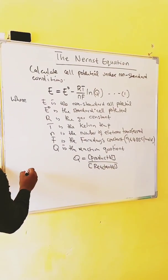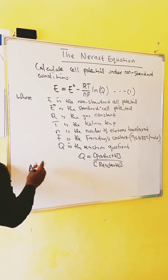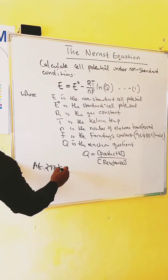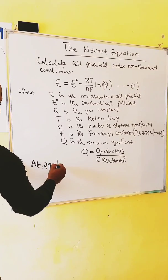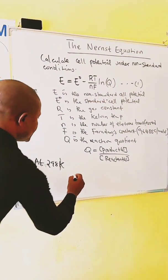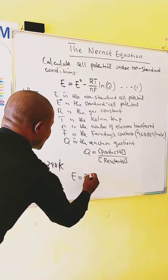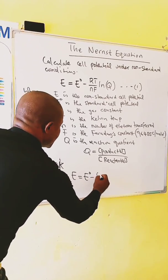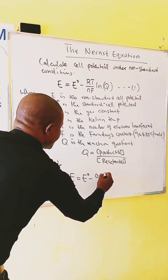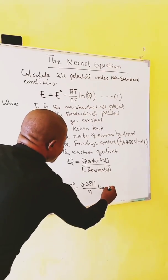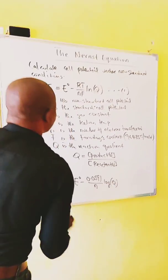At 298 Kelvin, equation 1 becomes E equals E0 minus 0.0591 over N log Q.